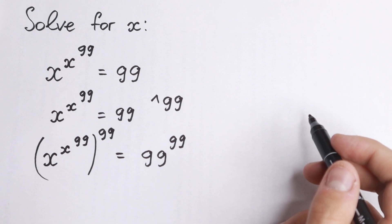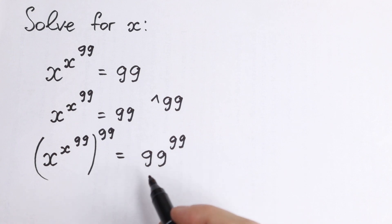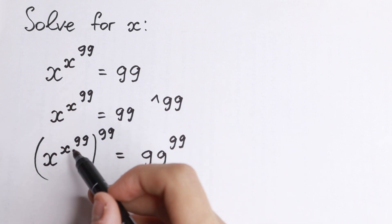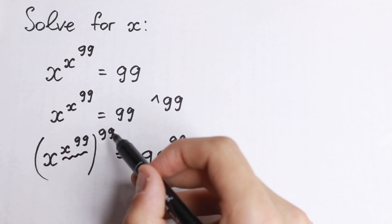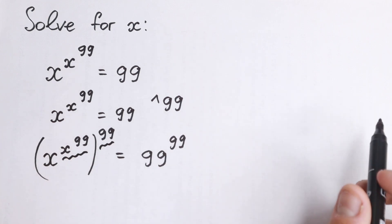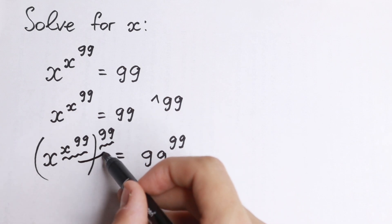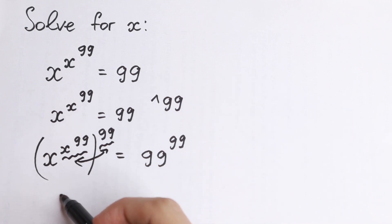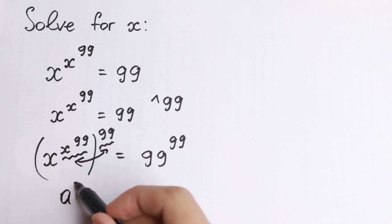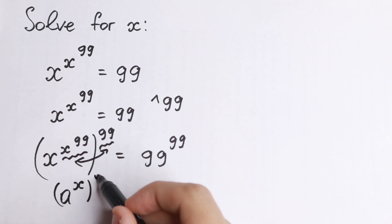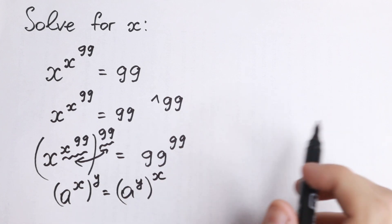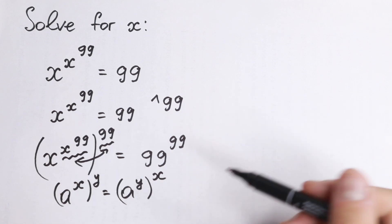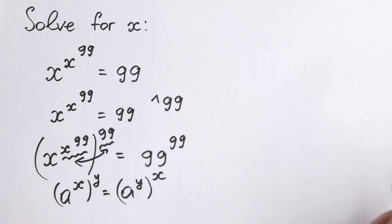Now I want to show you a rule of interchange. We can write the left side as x to the power 99, to the power x to the power 99, because there is a rule in math that we can easily swap these exponents. If we have a to the power x, raised to the power y, this is the same as a to the power y, raised to the power x. This is the rule of interchange.